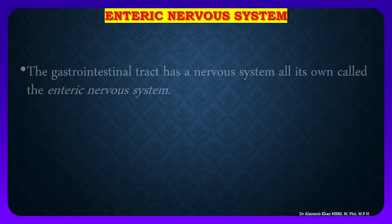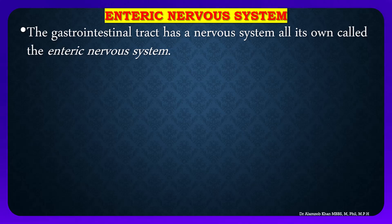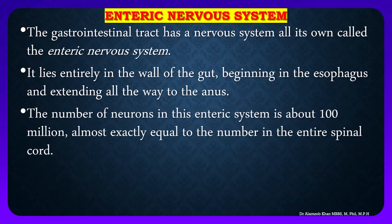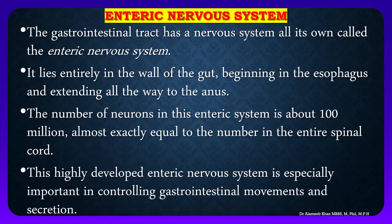The gastrointestinal tract has a nervous system all its own, called the enteric nervous system. It lies entirely in the wall of the gut, beginning in the esophagus and extending all the way to the anus. The number of neurons in this enteric system is about 100 million — almost exactly equal to the number in the entire spinal cord. This highly developed enteric nervous system is especially important in controlling gastrointestinal movement and secretions.